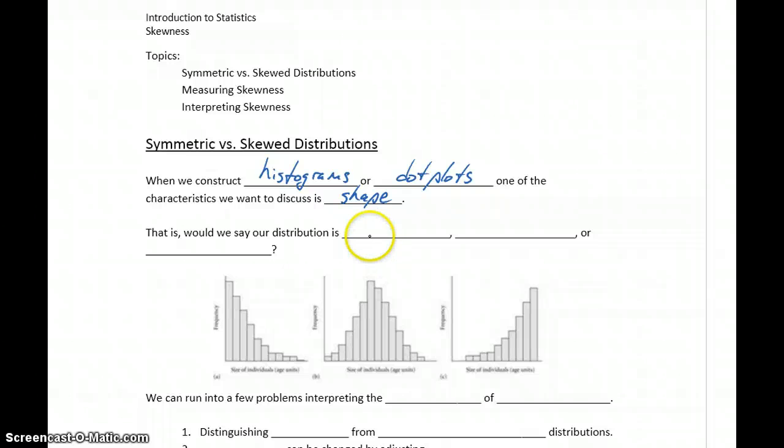So when we talk about shape, what we're wondering is, is our graph symmetric, is our graph left skewed, or is it right skewed?